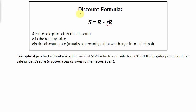In this example, we are going to use the discount formula to find the sale price of a product, where S is the sale price after the discount, R is the regular price of the product, and r is the discount rate, which is usually a percentage that we change into a decimal.